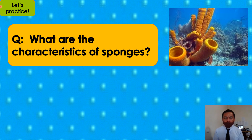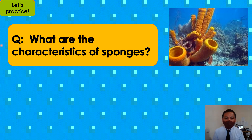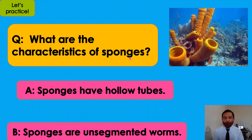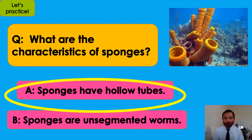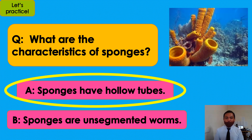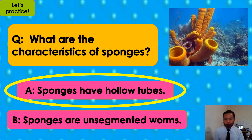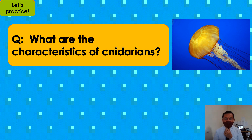Let's practice, students. Answer properly. What are the characteristics of sponges? Choose your answer: A or B. The answer is A — sponges have hollow tubes.